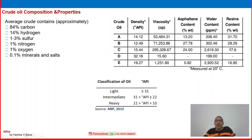You can see some of the properties — ABCD is location-based and properties-based: heavy, light, and medium type. Density — API, American Petroleum Institute density, or API gravity — is used to commercially represent crude oil as light, medium, or heavy. The classification: light crude oil is greater than or equal to 31 API gravity — so more than 30 is called light crude oil.